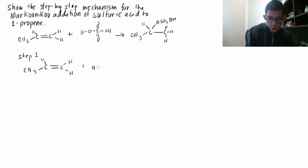We write sulfuric acid as HOSO2OH. We don't need to draw the entire complete structure; a condensed form is okay.